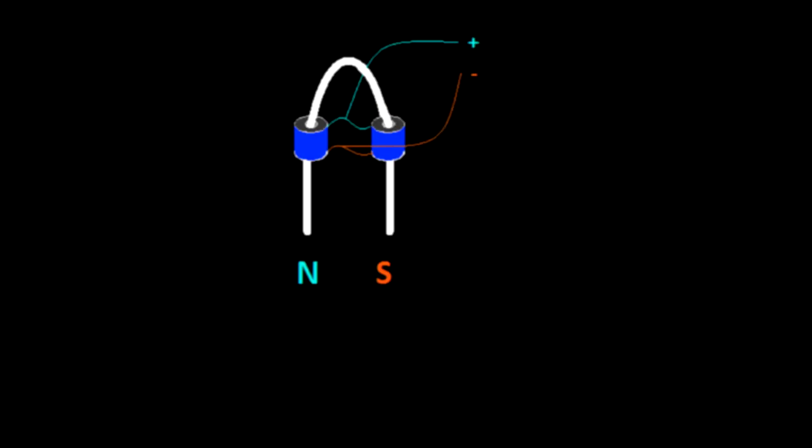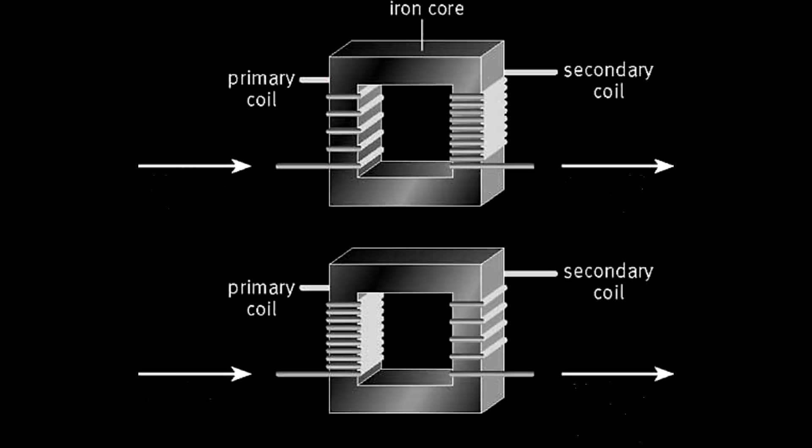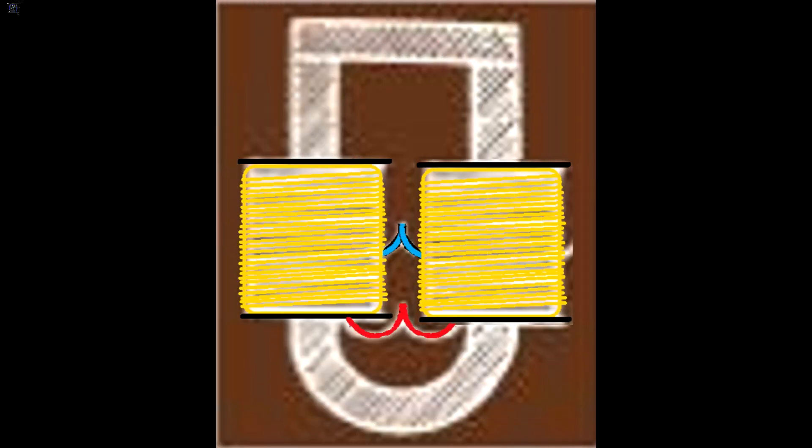This time, you will make an equipment that can be used for four purposes: electric magnet, transformer, generator, and holder of perpetual motion.